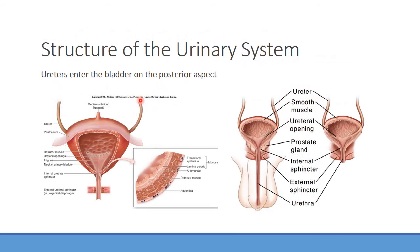Looking at how the ureters connect to the bladder, there's an area called the trigone — a triangle-shaped area of mucosa. The ureters run along the backside of the bladder and outlet into two areas of the trigone. The bottom portion leads out through the urethra. Importantly, the tissue of the bladder is smooth muscle — we call this the detrusor muscle — and it's important for forcing urine out through the urethra. There are also sphincters important for regulating outflow.